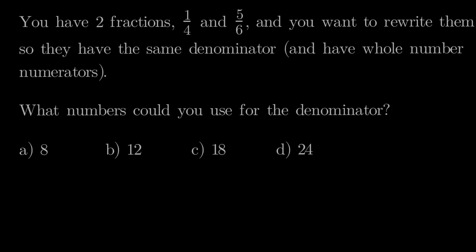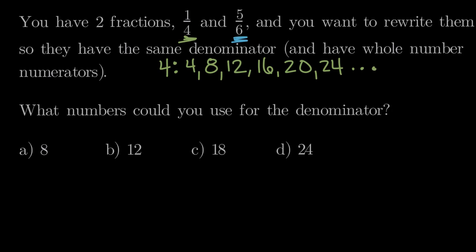Back to our original question: what denominators can we use for 4ths and 6ths? We know we need multiples. For 4: 4×1=4, 4×2=8, 4×3=12, 4×4=16, 4×5=20, 4×6=24, and so on. I'm stopping at 24 because that's the largest answer choice we need to consider — there are many more multiples of 4, but we don't need to list them all.